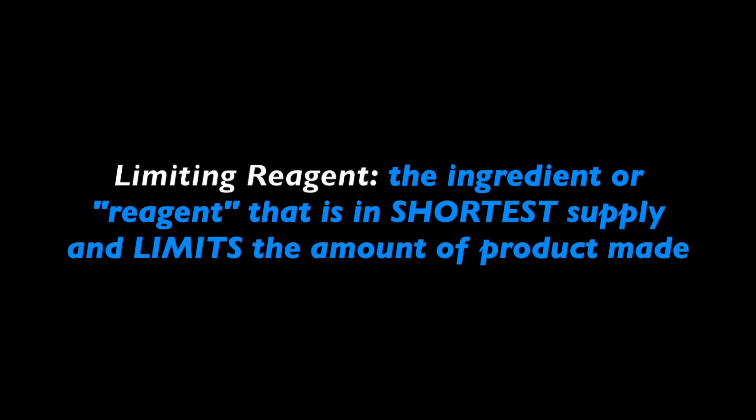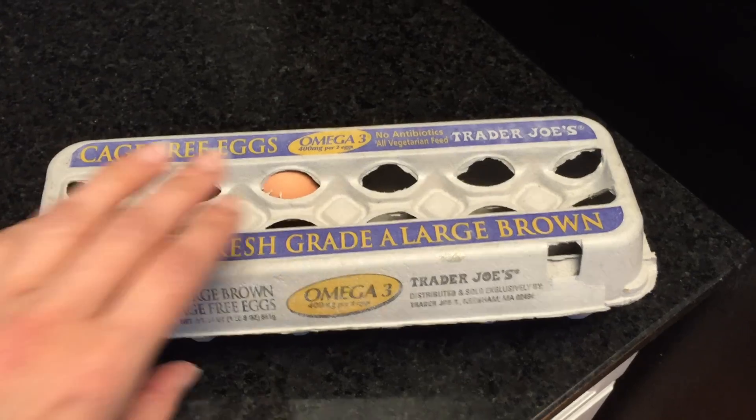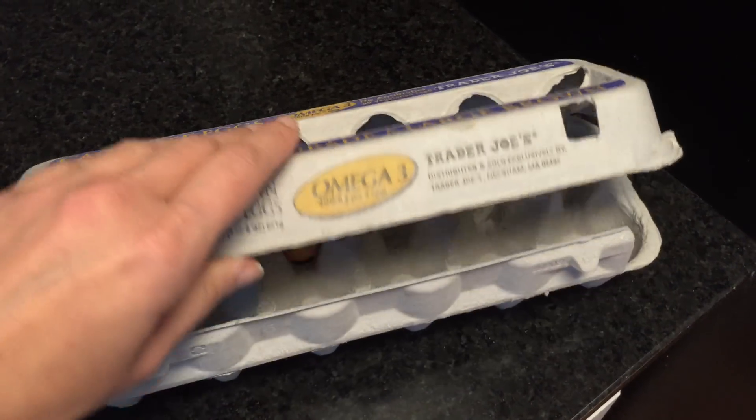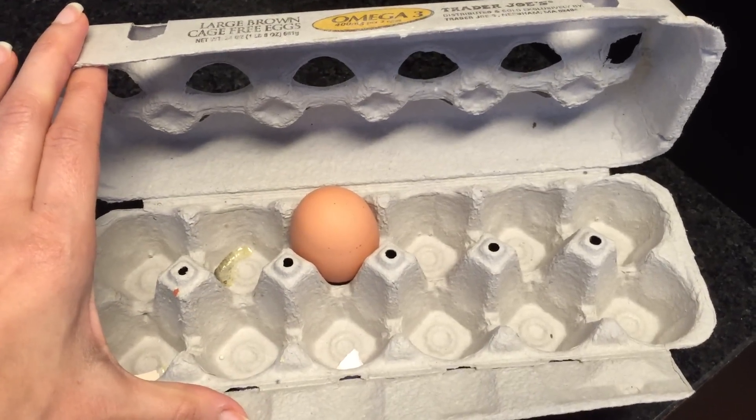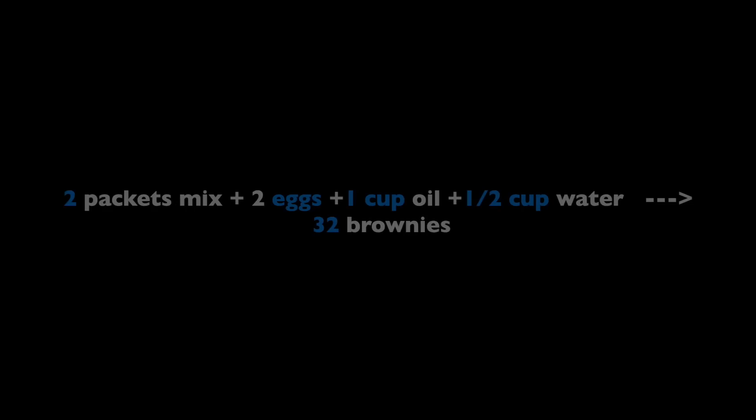Incoming curveball. The limiting reagent is the ingredient or reagent that is in shortest supply and therefore limits the amount of product that can be made. Let's assume that for our double batch we only had one egg. Recall that to make 32 brownies we needed two eggs, so having one wouldn't allow us to make 32 brownies. The egg would be the limiting reagent here.